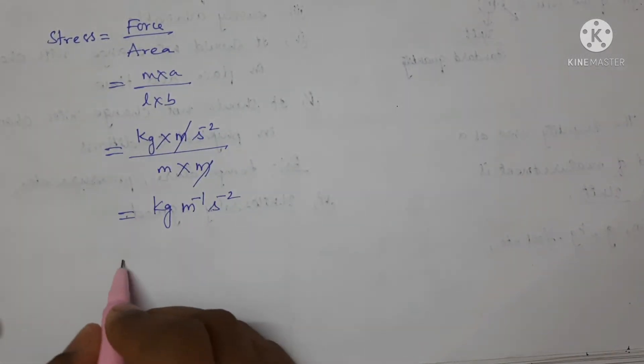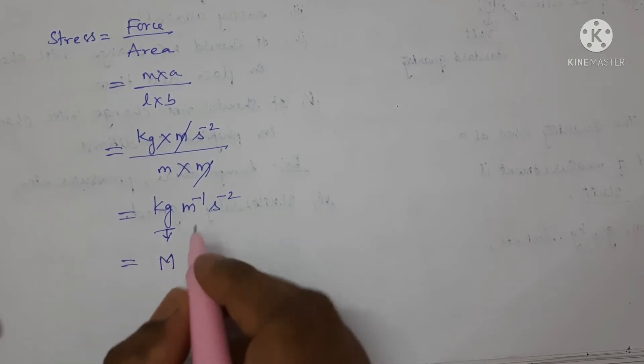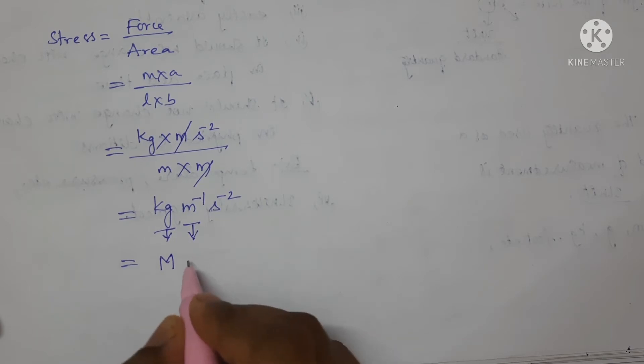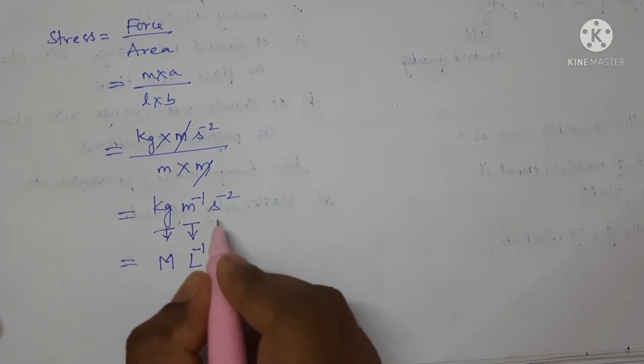Now, express the dimension of formula. Kg is expressed in terms of capital M. And meter is expressed in terms of capital L. Power minus 1 is there. So, L power minus 1.